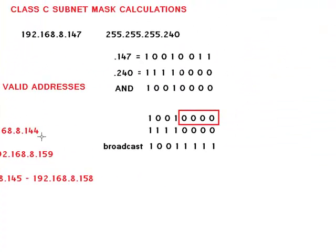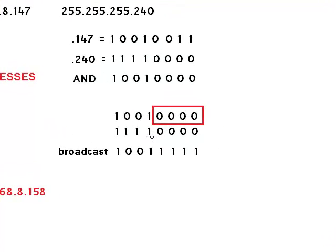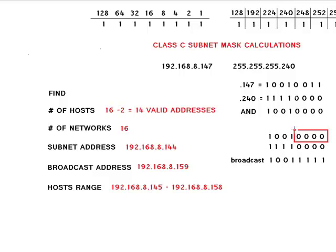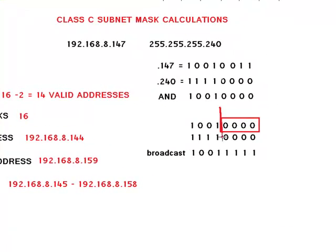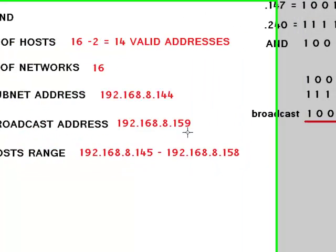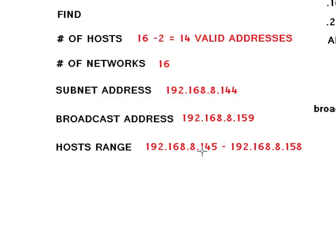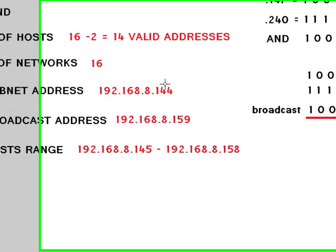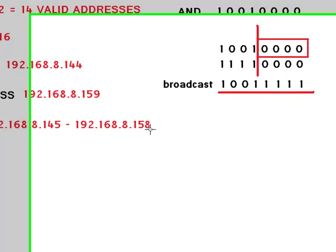To calculate our broadcast address we take our mask, see where the dividing line is, and take our subnet address and convert the zeros. You leave the numbers under the ones unchanged and only change the zeros after the dividing line into ones, which when converted to decimal gives us 159. To find our host range you just do the range between those two numbers, which is 145 to 158.